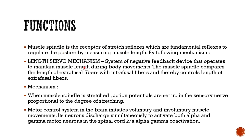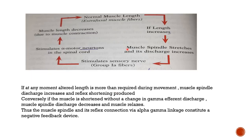This is achieved by the length servomechanism — an important and frequently asked topic. The length servomechanism is a system of negative feedback that operates to maintain muscle length during body movements. The muscle spindle compares the length of extrafusial fibers with intrafusial fibers and thereby controls the length of extrafusial fibers. When the muscle is stretched, action potentials are set up in the sensory nerve proportional to the degree of stretching, causing reflex contraction. The motor control system in the brain initiates voluntary and involuntary movements; its neurons discharge simultaneously to activate both alpha motor neurons supplying extrafusial fibers and gamma motor neurons — this is called alpha-gamma coactivation.